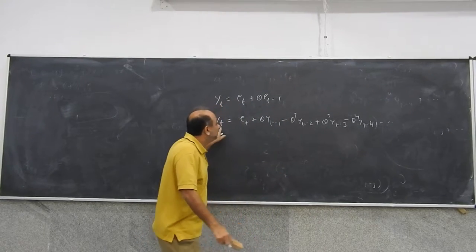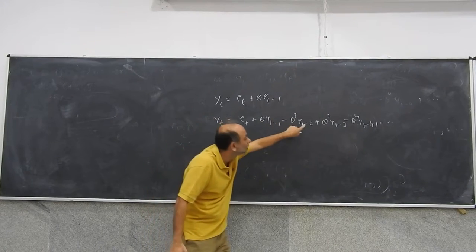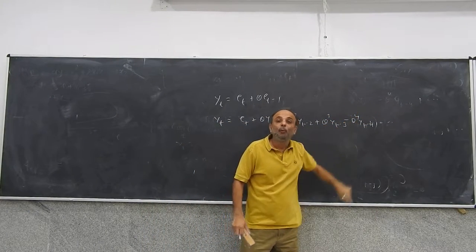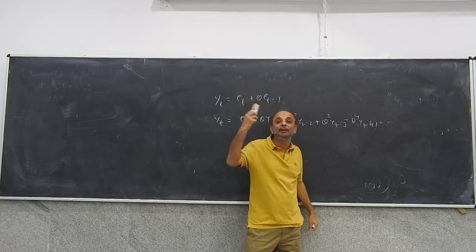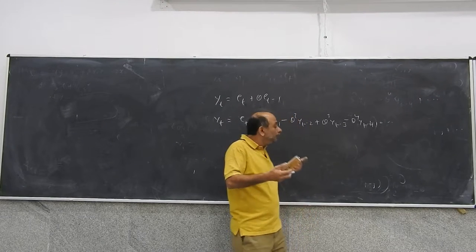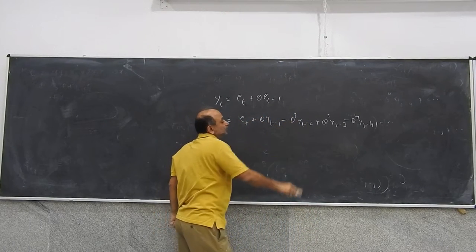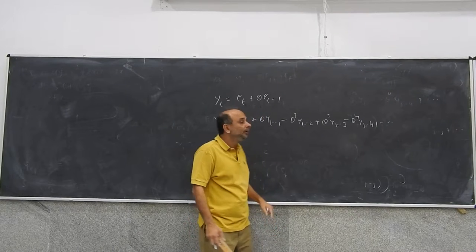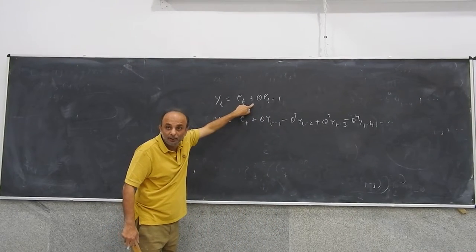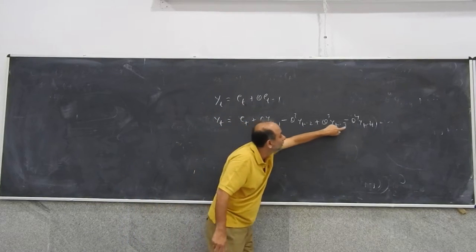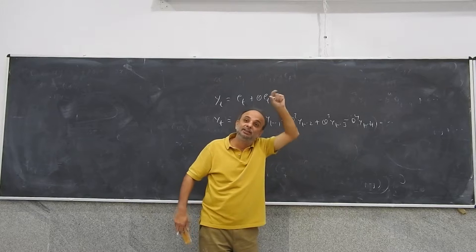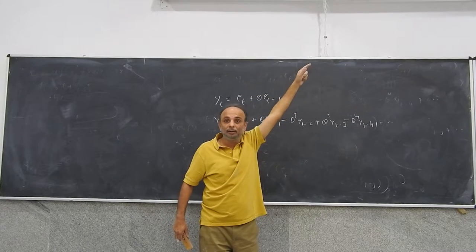Which means that yt now depends directly on yt−1, yt−2, yt−3, yt−4, and so on ad infinitum. So yt is directly correlated with yt−1, yt−2, yt−3, yt−4, yt−5, and so on. But what are the correlations? θ, θ², θ³, θ⁴. Since this is an invertible process, meaning |θ| < 1, this correlation will keep becoming smaller and smaller. But direct correlations will exist for infinitely long lags.